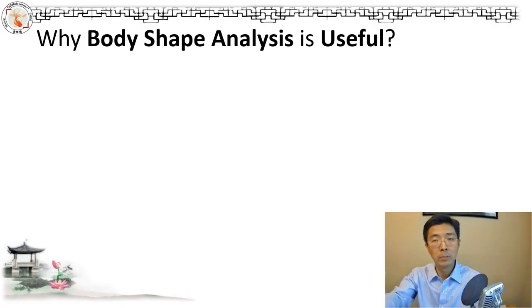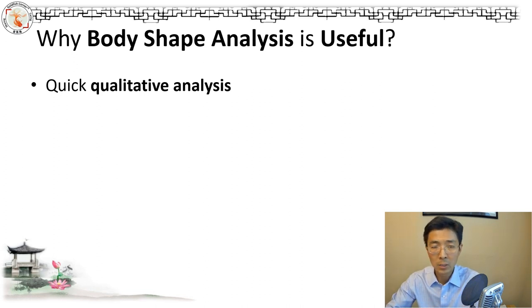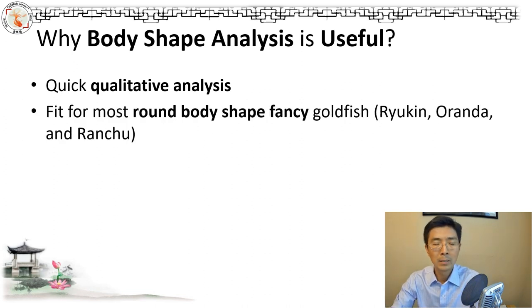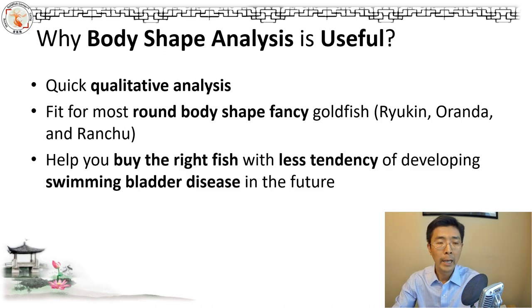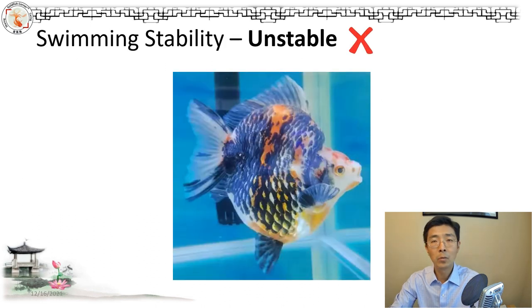Why do we need this body shape analysis? Why is this useful? One thing is it allows quick qualitative analysis. When you buy a fish, you can just quickly check by eye to see the body weight distribution and whether it fits a rounded shape. The basic benefit is hopefully it helps you buy the right fish. When you go to an online store or a local pet store, you want to buy a fish that has less tendency of developing swim bladder issues in the future.